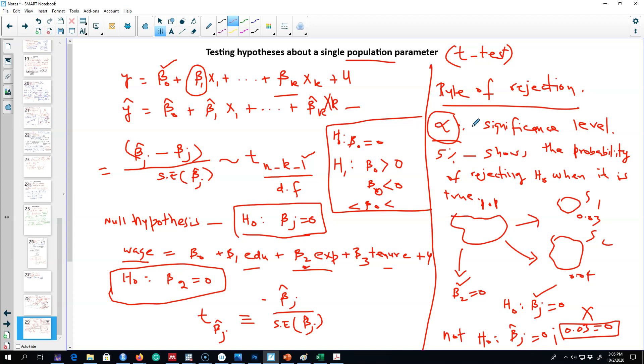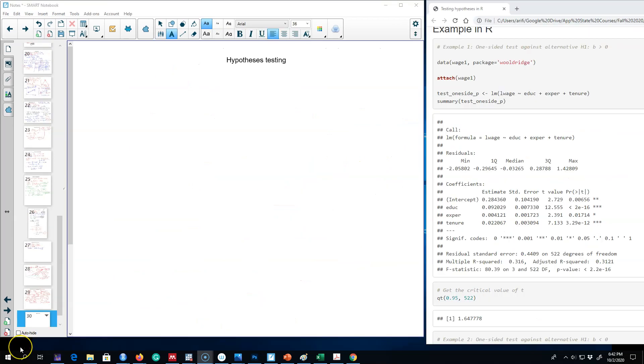After we have that, we can have critical t values and then calculate our t values from the beta coefficients and compare those with the critical value. Anytime our calculated value is greater than the critical value, we will reject the null hypothesis.